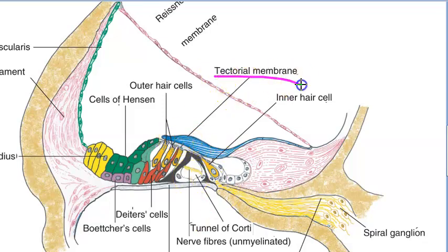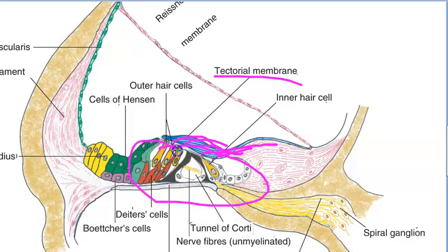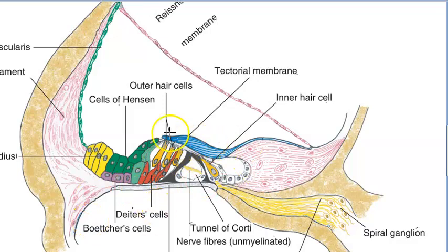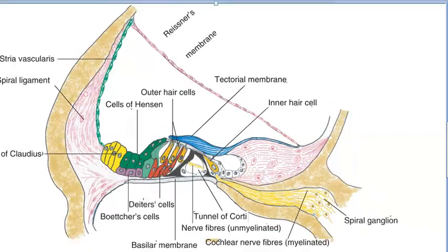The fourth component is the tectorial membrane. It consists of a gelatinous matrix with delicate fibers. It overlies the Organ of Corti. The key point is the shearing force between the hair cells and the tectorial membrane — this shearing force is what produces the stimulus to the hair cells. The stimulus for the hair cells is this shearing force between the hair cells and the tectorial membrane.